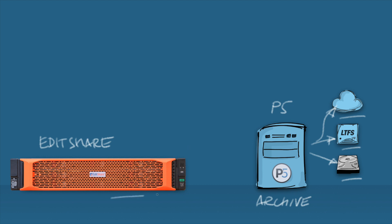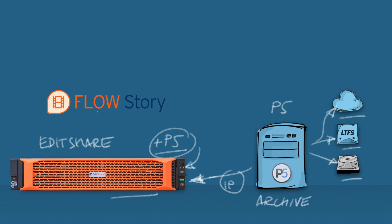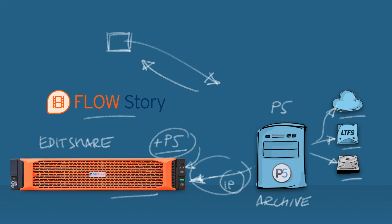In order to archive from the EditShare machine, we need to install P5 as a client — the P5 software gets installed directly onto the EditShare operating system. The P5 server is then hooked up to read and write data to EditShare storage via an IP connection set up between the two. In this video, we'll install P5, set up this connection, and use the Flow Story software to specify assets within the DAM to be written to archive storage.